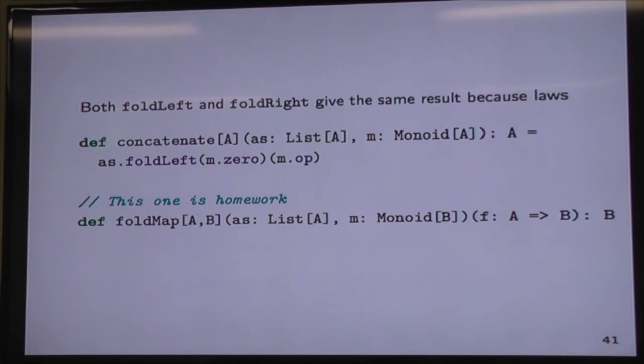Not only that, but because we have these laws that guarantee how the monoid operation will work, we can use fold left or fold right with our monoid operation and identity, and we'll always get the same result. If you remember back to our fold left and fold right, one of the differences is that the fold left will associate from the left, fold right associates from the right. And so we can define a concatenate function, which kind of wraps this up nicely for us. So it will take a list and then a monoid, and then use the monoid operation and identity to do the fold for us.